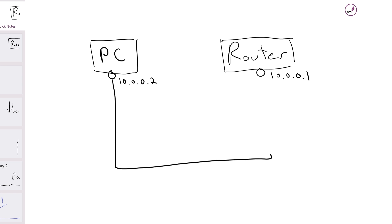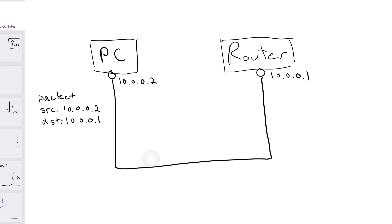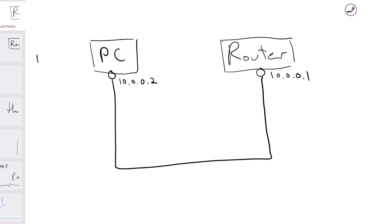Data is transported through the internet in packets. A packet has a source address, a destination address, and a payload, which is the actual data. For the purposes of this, we will actually demonstrate a packet with a ping, something you should all be vaguely familiar with.